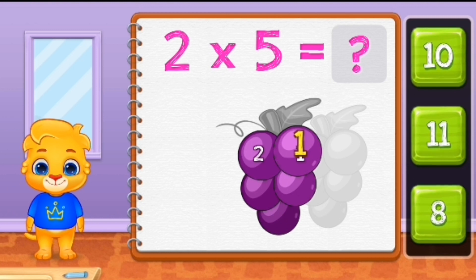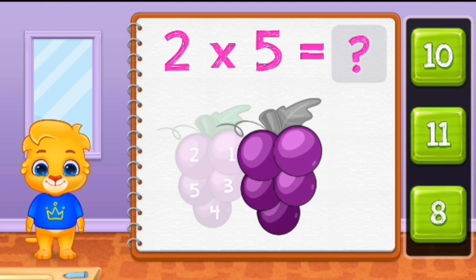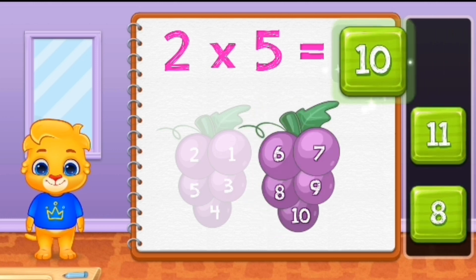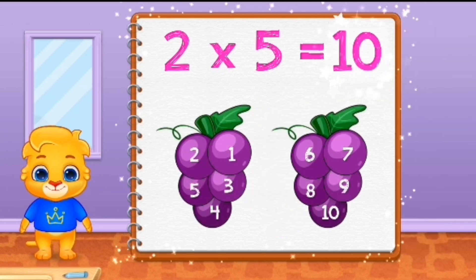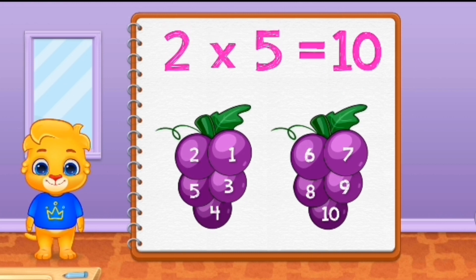One, two, three, four, five. Five. Six, seven, eight, nine, ten. Ten. Yay! Two times five equals ten.